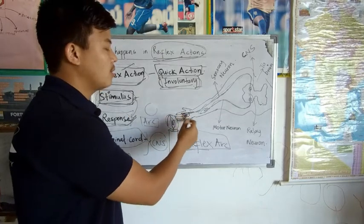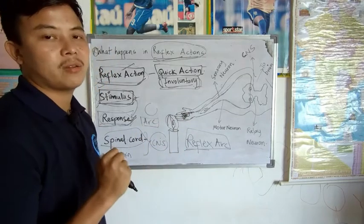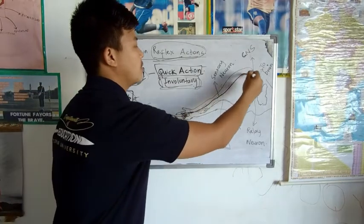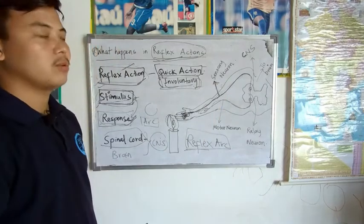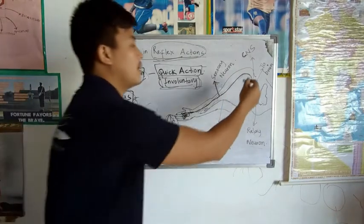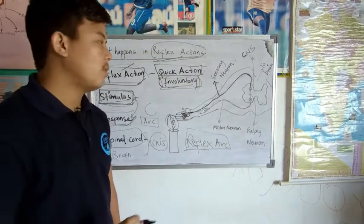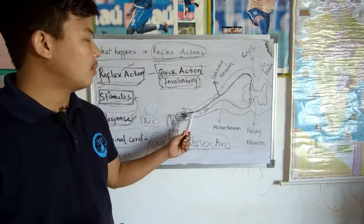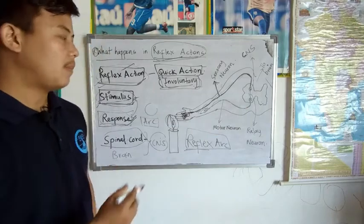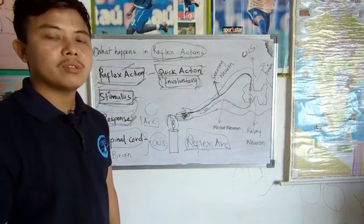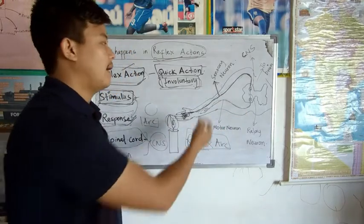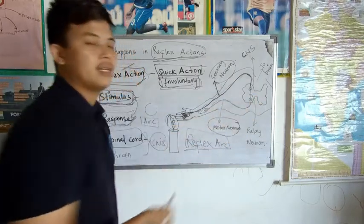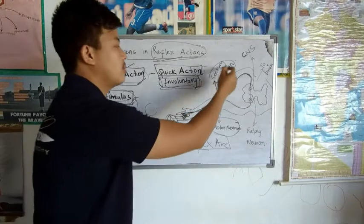The receptor will sense the changing environment. The skin in your hand is a sense organ, so the skin senses the change in the environment. The signal is taken to the sensory neuron. The sensory neuron carries this signal and it reaches the spinal cord. The spinal cord is inside the vertebral column where all the neurons get connected. In the spinal cord, two types of neurons are connected with the help of the relay neuron — the sensory neuron and the motor neuron.